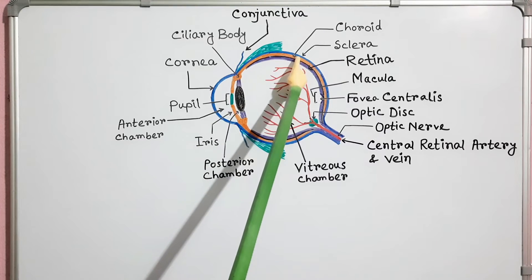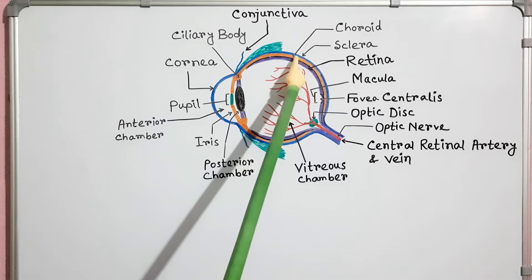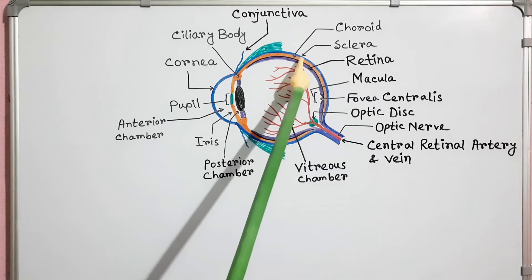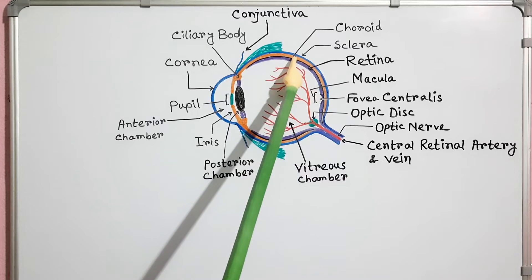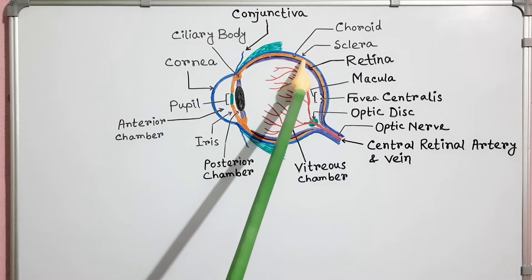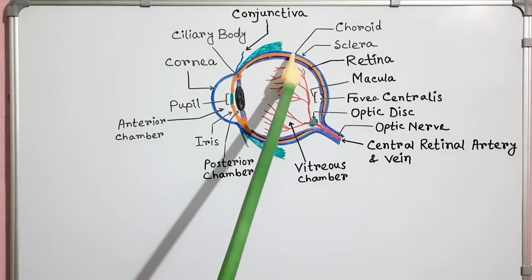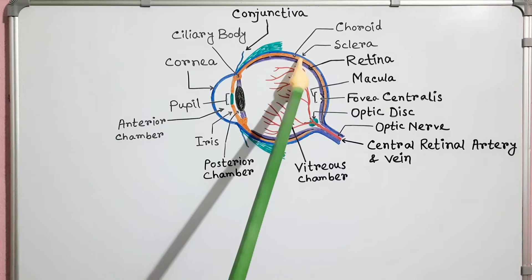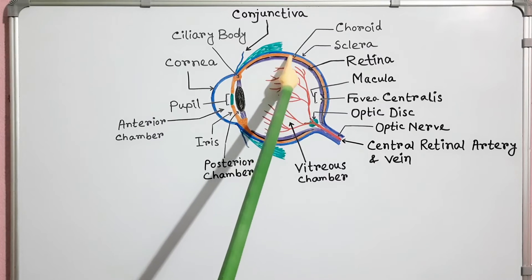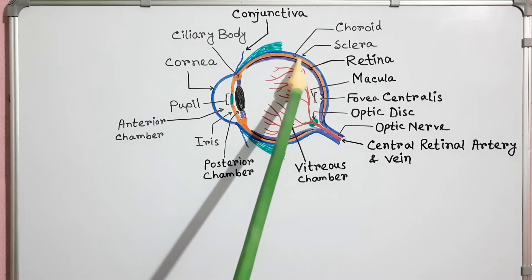This is the choroid. It is the posterior portion of the vascular layer. It is a very thin structure. It consists of a vascular network and many melanin-containing pigment cells. That's why it appears black or dark brown in color. The black color absorbs light so that it is not reflected inside the eye.